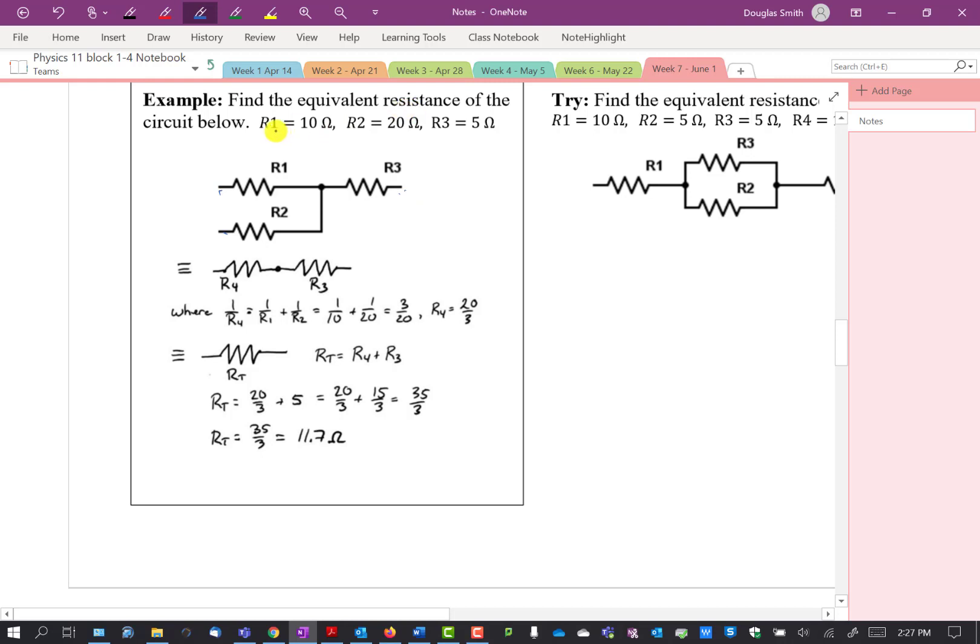And it says find the equivalent resistance if R1 is 10 ohms, R2 is 20 ohms, R3 is 5 ohms. So the idea is that we can replace this with a circuit that looks like this, with some RT, and that would be resistantly equivalent to this one with the three resistors. Electrically equivalent, sorry. So how do we do that?